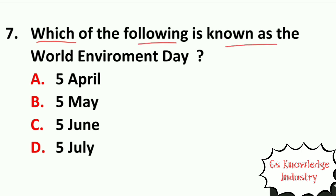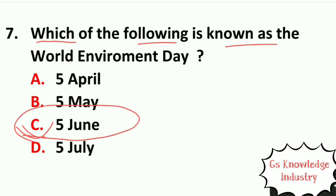Question seven: which of the following is known as World Environment Day? Option A, April. Option B, May. Option C, 5 June. Option D, July. The right answer is Option C — 5 June is World Environment Day.